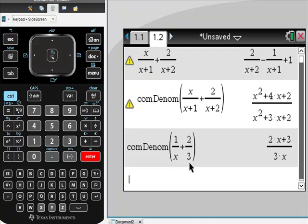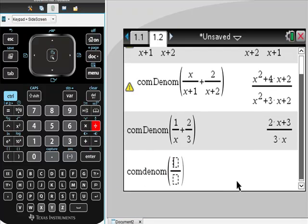This can get insanely complicated if you wanted to. Just to show you really quickly how good this actually is: comDenom, I could put in another fraction, like 1 over x.